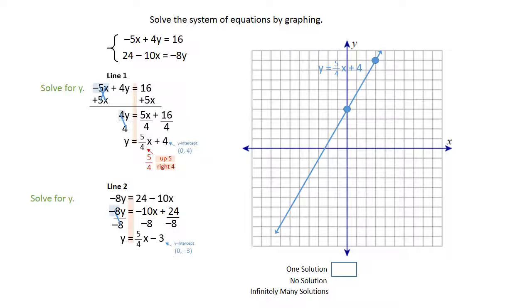So this gives us a y-intercept of 0 negative 3. Go ahead and plot that on your graph. Look at the slope. It's telling us to go up 5 and right 4, so plot a second point and draw a line through that point. Labeling that line, y equals 5 fourths x minus 3.